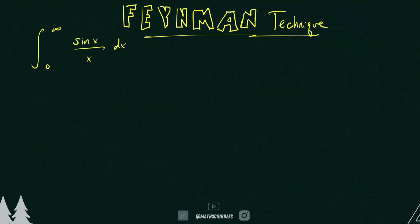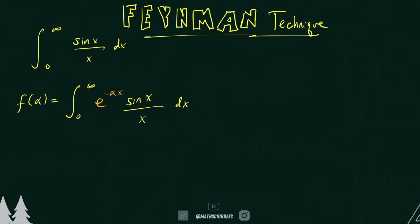Here's our integral in question, and if you were to try all these different techniques, you're going to find that you're not going to be able to solve it. This is why Feynman's technique is just so beautiful. We're going to start off by rewriting a function: F(α) is equal to the integral from zero to infinity. We're going to introduce an e to the negative αx. Now we have a function in terms of alpha, and the reason we're doing this is so that something cancels out whenever we take the partial derivative. That is precisely why we like to use the Feynman technique.